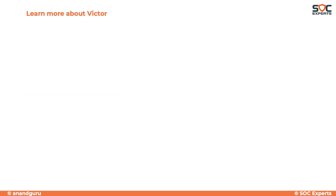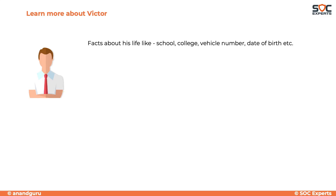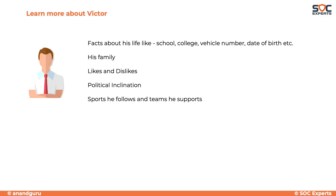The attacker invests time in learning more about Victor — facts like where he did his schooling and college, what vehicle he uses, his registration number, date of birth, family members, likes and dislikes, political inclination, the sports he follows, and the teams he supports.